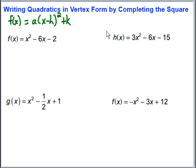When completing the square, we would typically add b over 2 squared to both sides of our equation. But when we're working with a function and we want to get it into vertex form, we don't really have two sides — we just have one. So rather than doing the same thing on both sides to maintain equality, what I'm going to do is add b over 2 squared and then subtract it again.